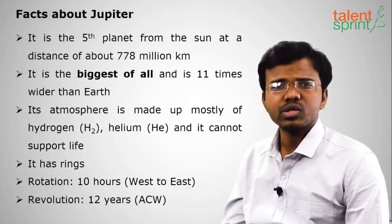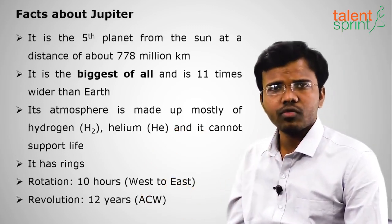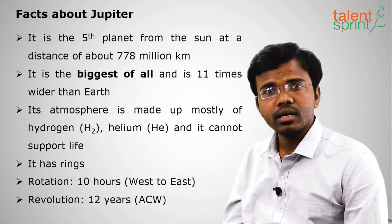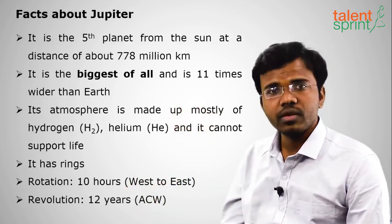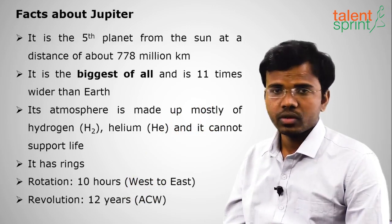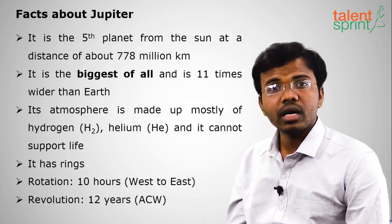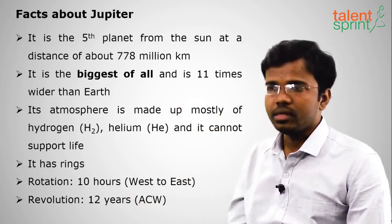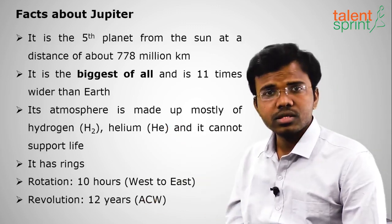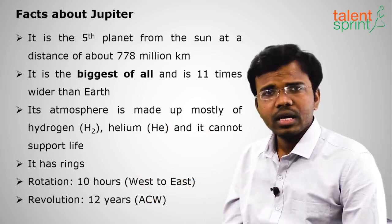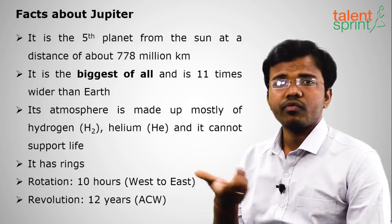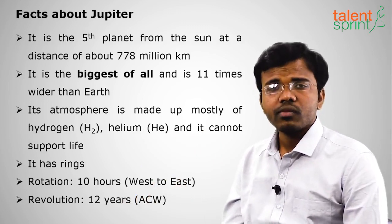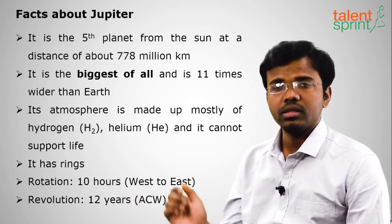Next comes Jupiter, the heaviest and biggest planet in the entire solar system. Mercury is the smallest. Jupiter is the fifth planet from the sun at a distance of 778 million kilometers — it is 11 times wider than Earth. It has rings, and its atmosphere consists mostly of hydrogen and helium. It cannot support life. Jupiter takes 10 hours for one rotation, from west to east.